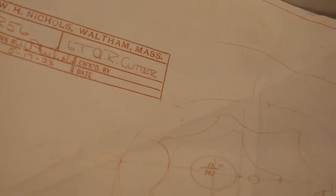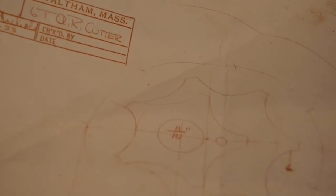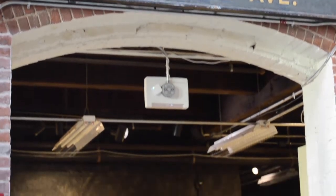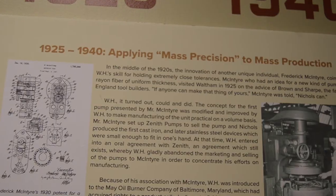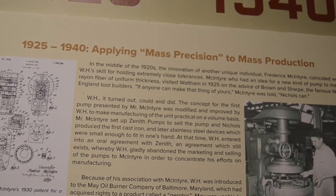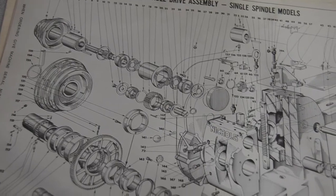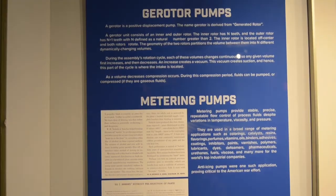Invented by Myron F. Hill, the girotor was first manufactured in the 1920s by the W.H. Nichols Company in Waltham. Hill worked in partnership with Nichols, who had developed the first equipment capable of producing the girotor's precise and complex shape.